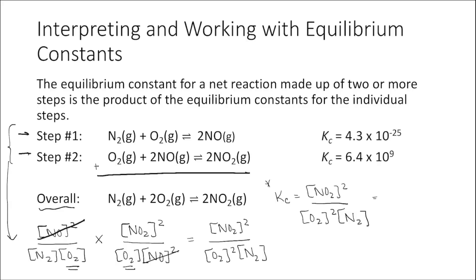That is exactly what we defined as the equilibrium constant expression for the overall reaction. So the value for the equilibrium constant for this overall reaction equals the product of the equilibrium constants for each individual step: 4.3 × 10⁻²⁵ multiplied by 6.4 × 10⁹, giving a value of 2.8 × 10⁻¹⁵.